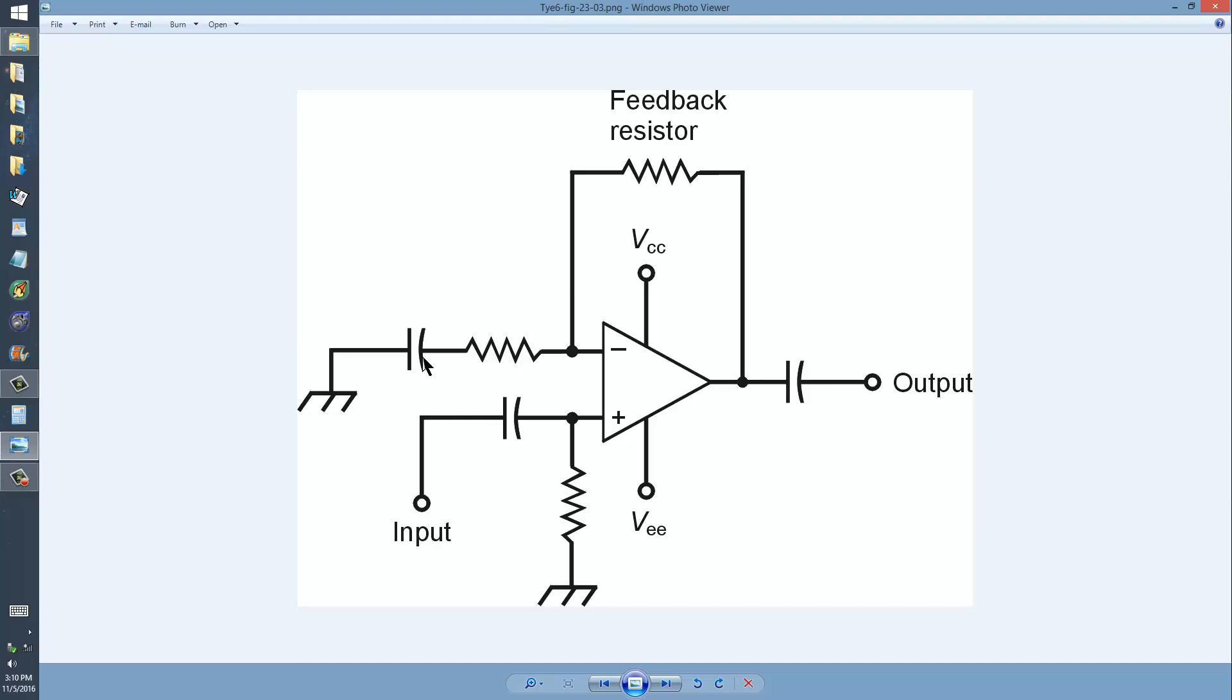This blocking capacitor right here keeps the inverting input from being completely shorted out to ground for direct current, while allowing signal, if you want to apply a signal to the inverting input, which in this case we do not apply any input signal to that, it allows signal to get through. So it places this point at ground for signal, but not for direct current because of this resistor, which assists with the biasing of the bipolar transistors inside of this triangle, which are written in invisible ink, so you can't see them, but they're there anyway.